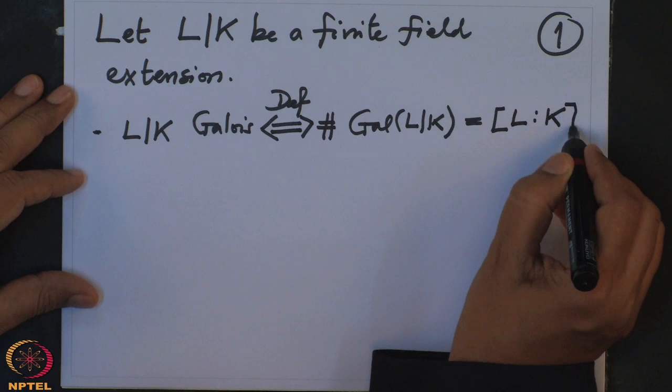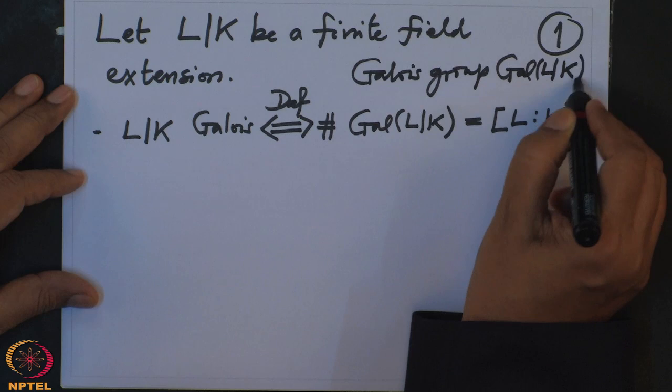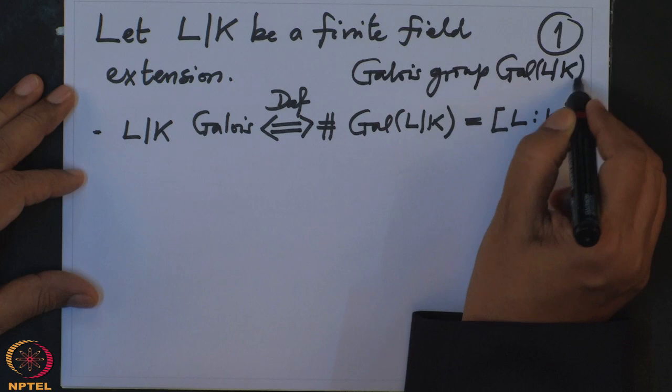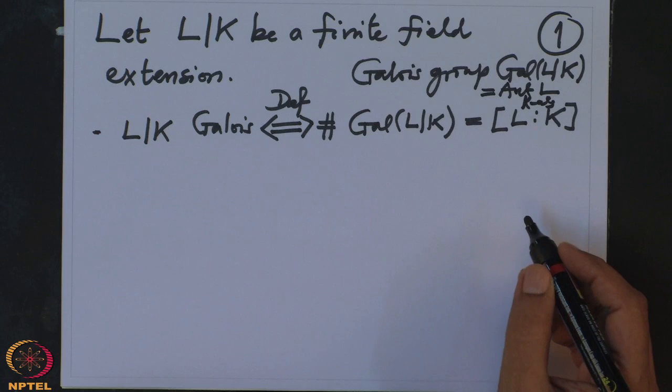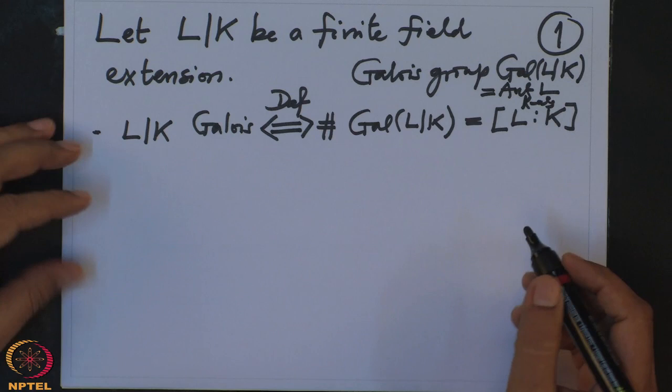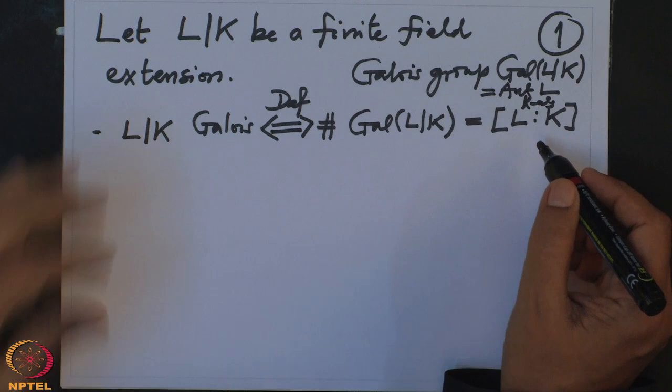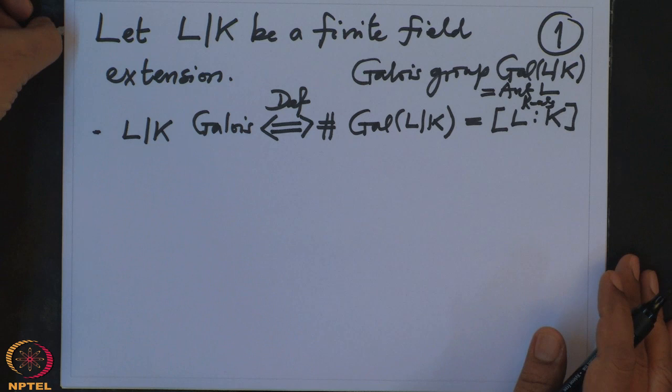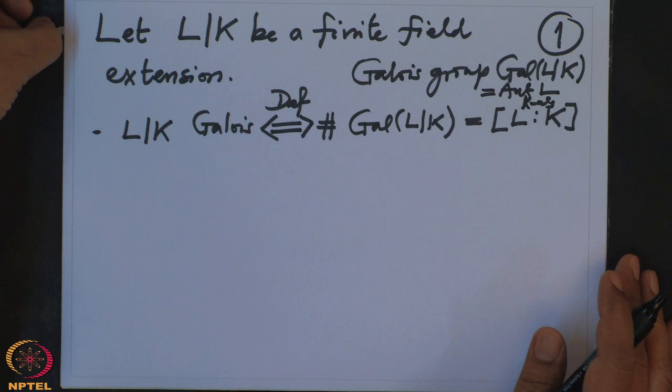The Galois group Gal(L/K) is attached to any finite field extension and is nothing but the automorphisms of L as a K-algebra. Elements of the Galois group are also called symmetries of the field extension. When the number of symmetries equals the degree of the field extension, this is the maximum possible, because we proved that the order of the Galois group is bounded by the degree — this followed from Dedekind–Artin's theorem.